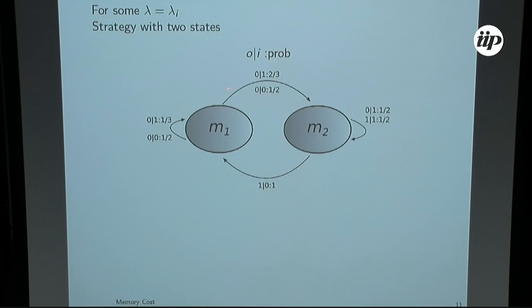This is an example for a transducer with two states. You have two states, this input, the output given the input and the probability of this transition to happen. The memory cost associated to this model would be simply the number of states, the number of bits you need to record the state. There are other definitions of memory, but in this talk, we simply count the number of states we use.